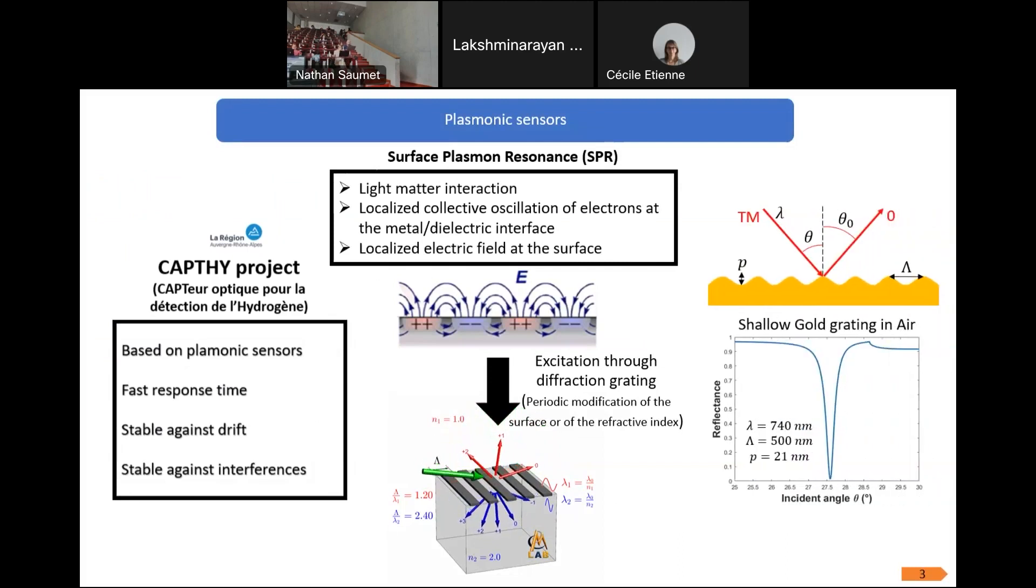A diffraction grating has the particularity to diffract light in different orders in reflection and transmission. Here we have the illustration of fully excited plasmon through shallow grating of few nanometers. As you can see, we have a resonance for a defined angle, but it also works for a defined wavelength.